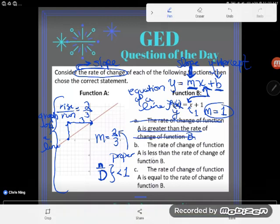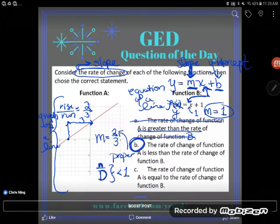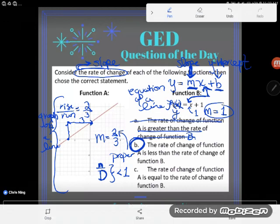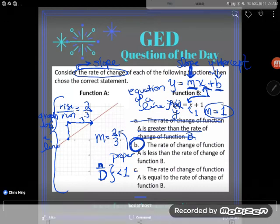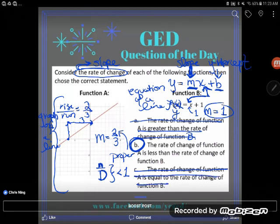Next one. The rate of change of function A is less than the rate of change of function B. Yes, absolutely. We said that the value two thirds is less than the value one. This must be the right answer. And indeed, if we were to go on, the rate of change of function A is equal to the rate... No, two thirds is not equal to one. That's a silly answer. So B is the correct answer. B. Yay.